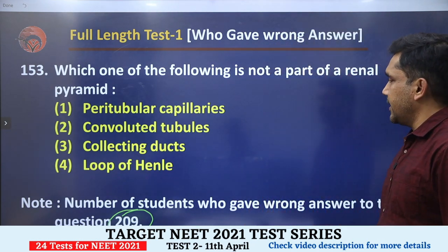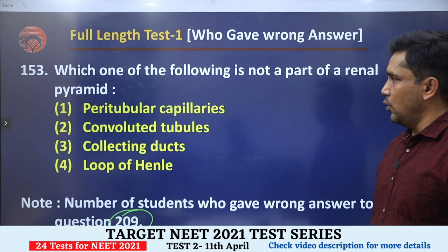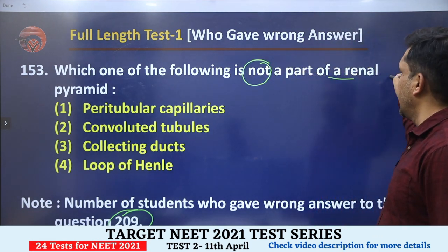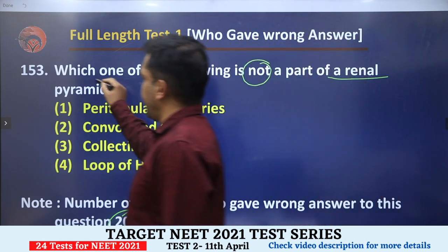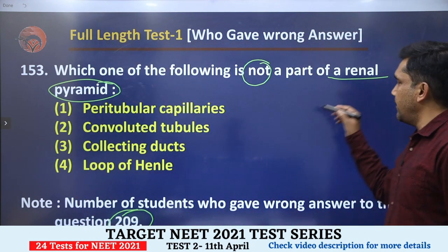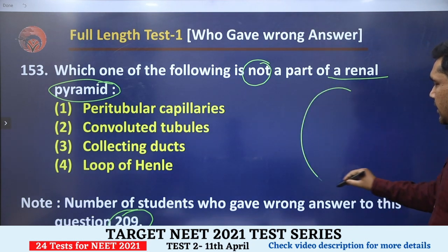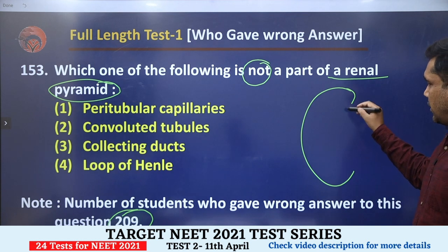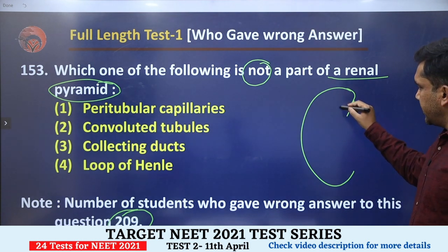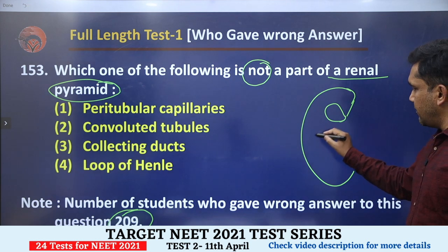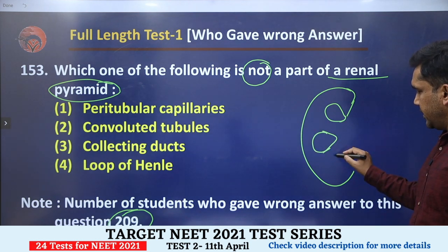Now let's see what the mistakes were and why. The question asked: which of the following is NOT a part of the renal pyramid? The renal pyramid is a conical mass of the medulla. The kidney has two parts: the peripheral cortex and the medulla. The conical portions in the medulla are called renal pyramids.